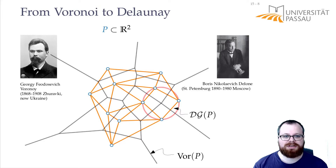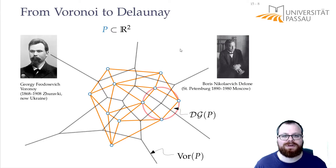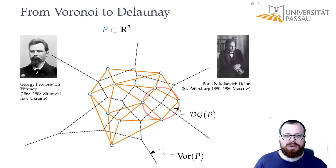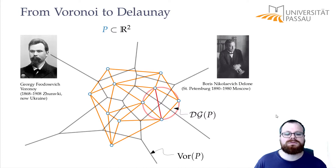So the Delaunay graph contains some edges but is not necessarily a triangulation yet. Instead, we will call all triangulations Delaunay that contain the Delaunay graph as a subgraph. So one Delaunay triangulation would be this one, and another one would be this one.